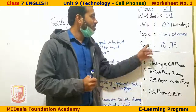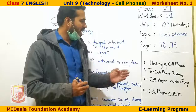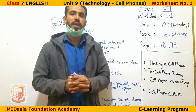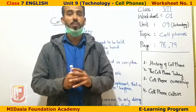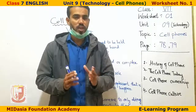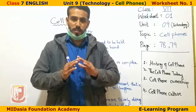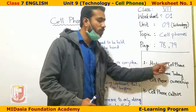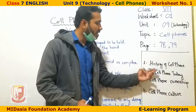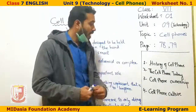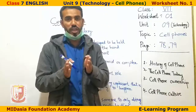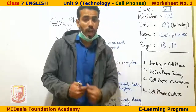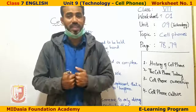This lesson is on page number 78 and 79. It has been divided into four parts. One thing to note: Americans call it 'cell phone' and British people call it 'mobile phone' — they mean the same thing. The four parts are: history of cell phone, cell phone today, cell phone ownership, and cell phone culture.